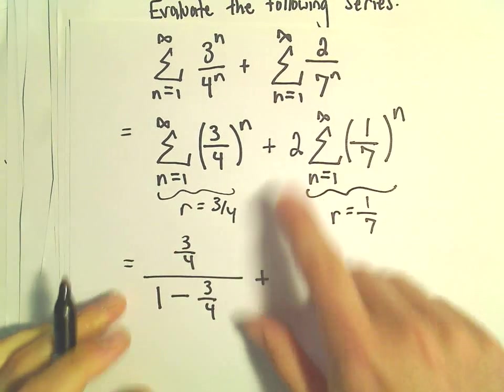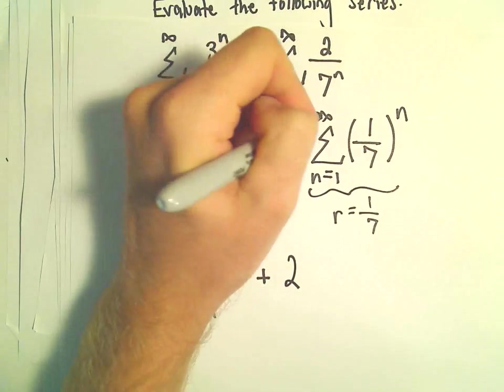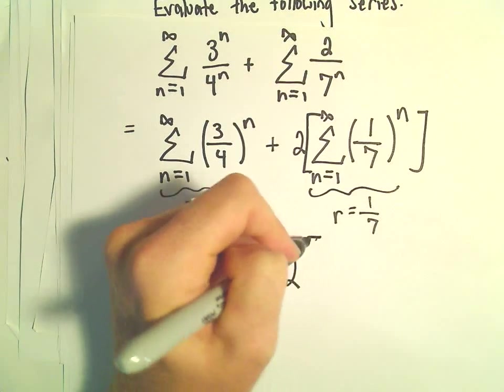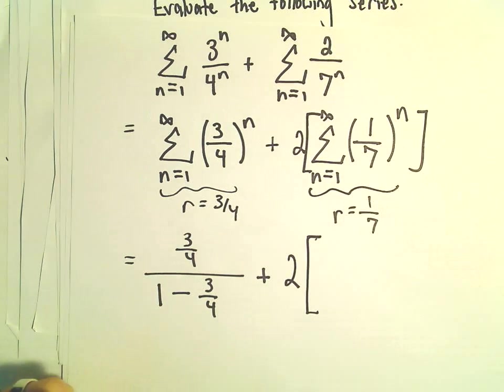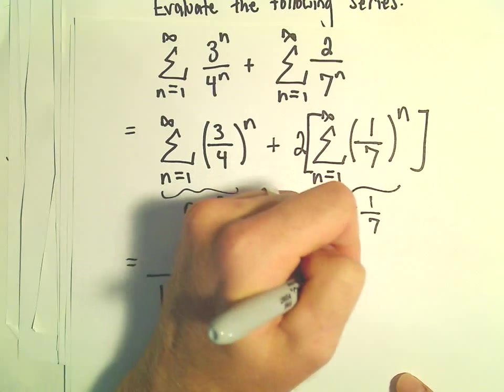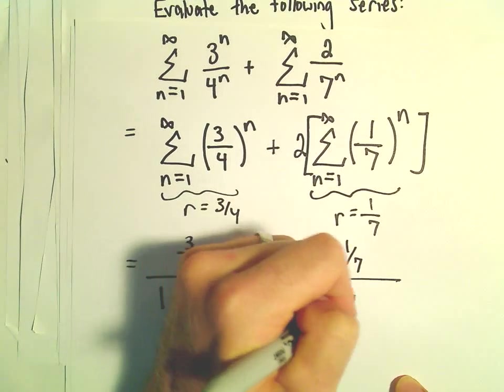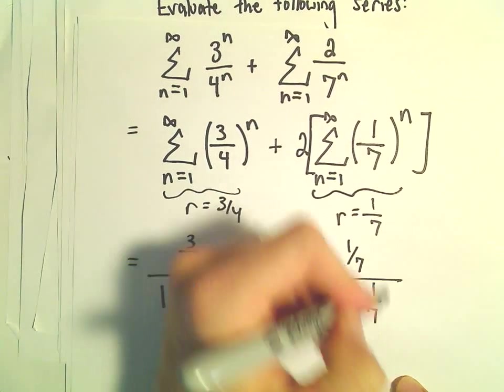Plus, then we have two times whatever the sum of our series is, so we have two times, the first term here, when we plug in n equals 1, we'll just be left with 1 seventh. And then 1 minus our r value, which again is 1 seventh.